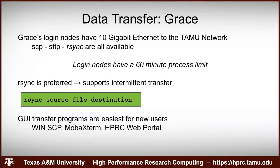Rsync is preferred because it supports intermittent transfer. The login nodes have a 60-minute process limit — if a transfer is going to take longer than 60 minutes, the process gets killed. Login nodes are for small job manipulation, not long processes. Rsync can resume a transfer if it dies in the middle, so you don't have to start over.